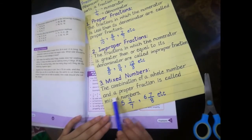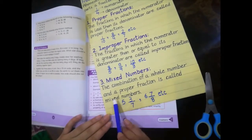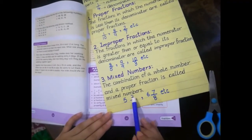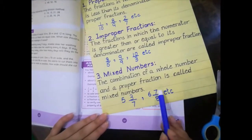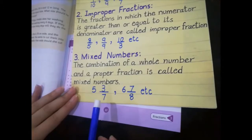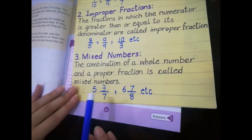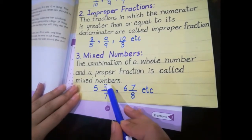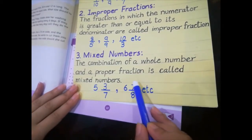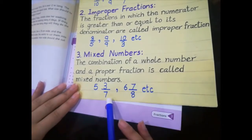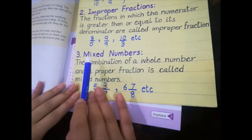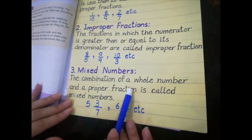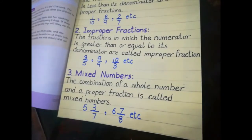The third type of fractions are mixed numbers. A mixed number is the combination of a whole number and a proper fraction. For example: 5 whole 3 by 7, and 6 whole 7 by 8. You can see two parts — the whole number part and the fraction part. Such types are called mixed numbers. Hope you understand the types of fractions.